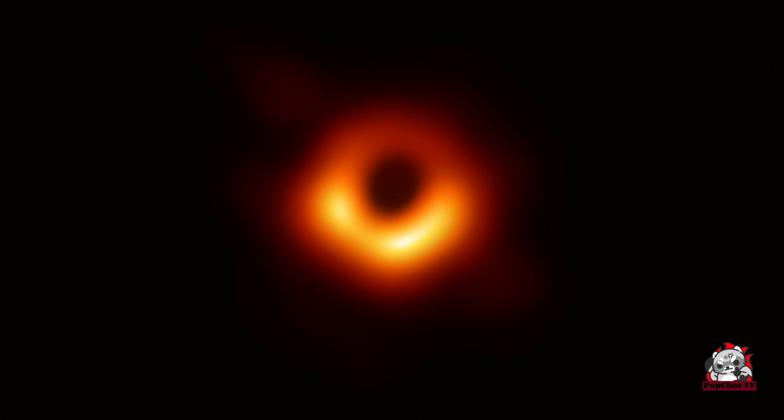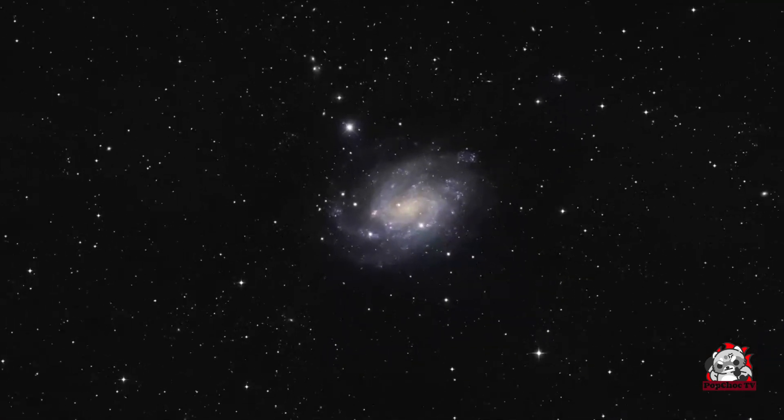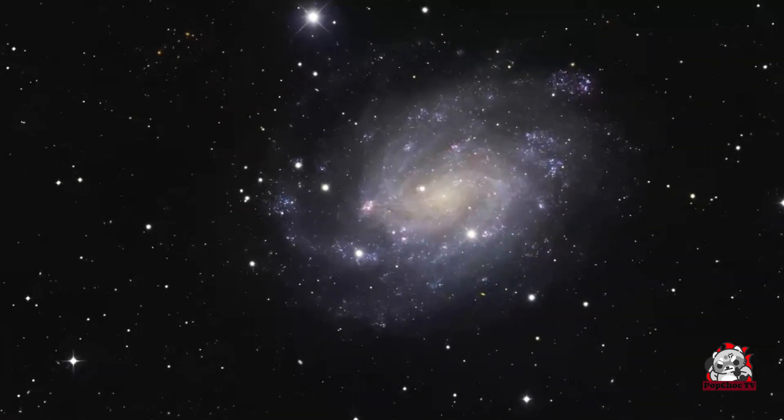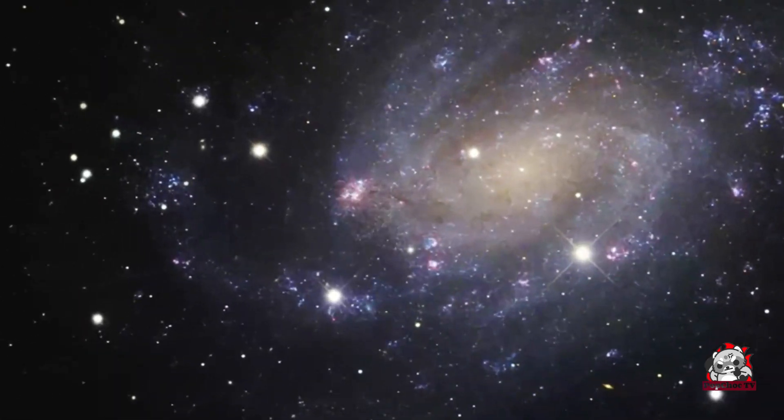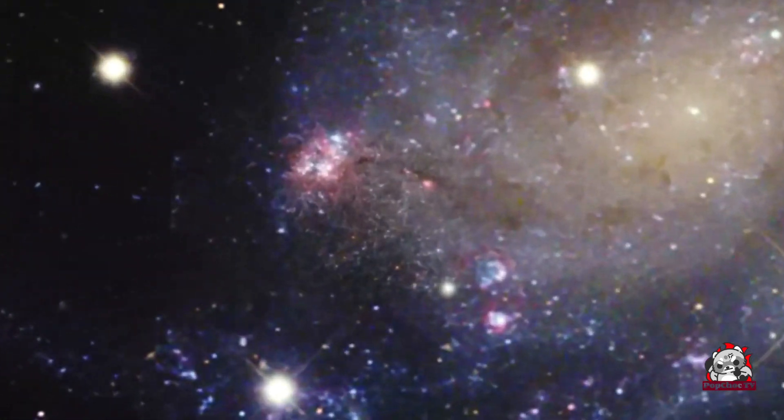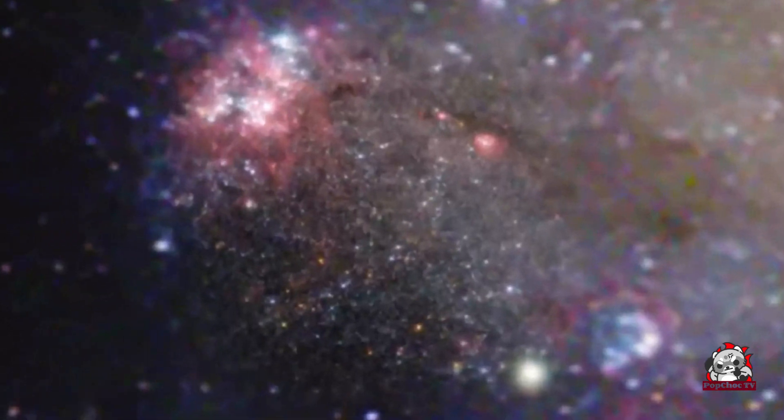Number 6 on our list is the incredible image of a black hole. In 2019, the Event Horizon Telescope captured the first-ever image of a black hole located in the heart of the galaxy M87. This stunning visual evidence of one of the universe's most enigmatic phenomena has given us a glimpse into the extreme gravitational environment surrounding black holes and confirmed our understanding of general relativity.